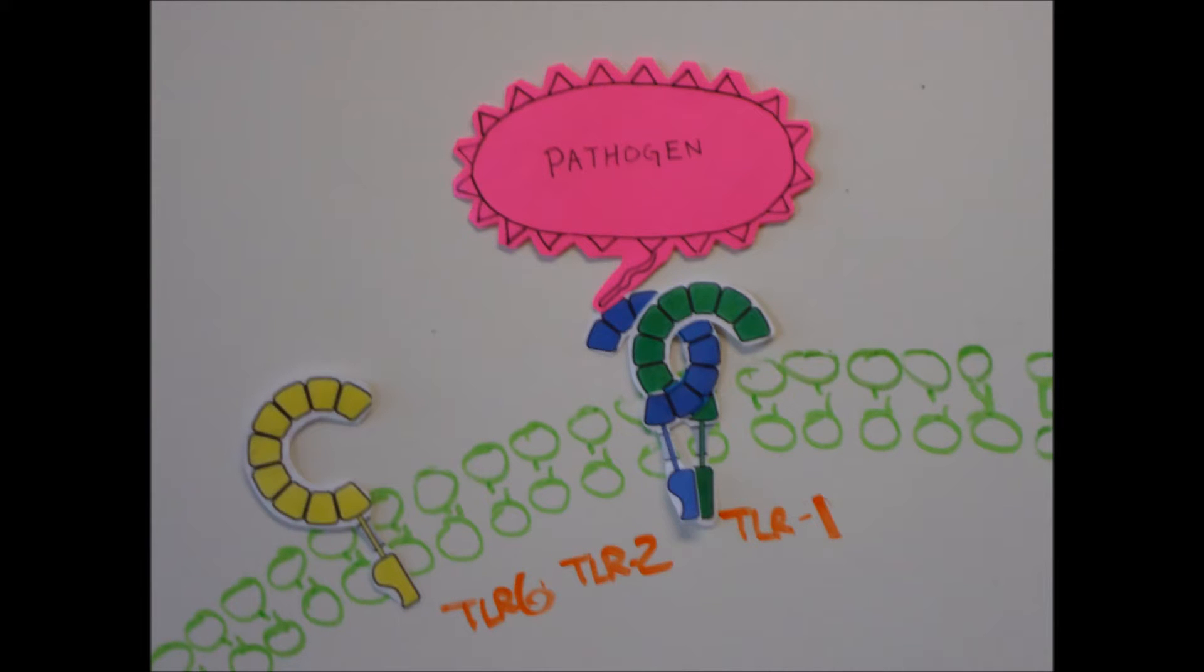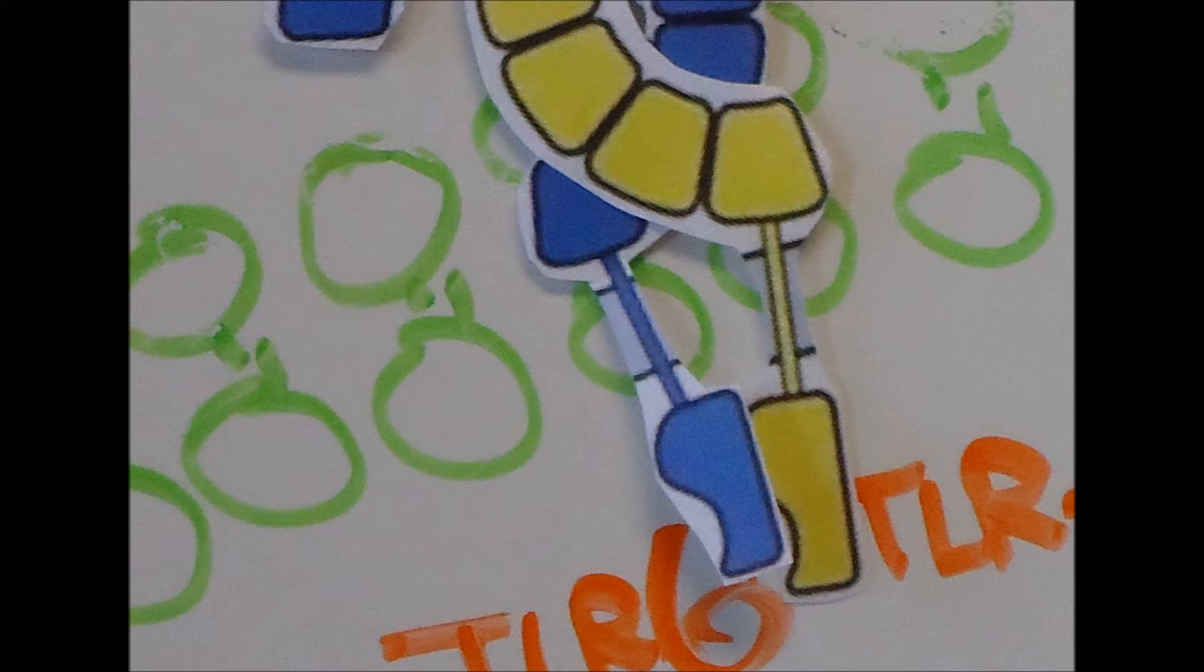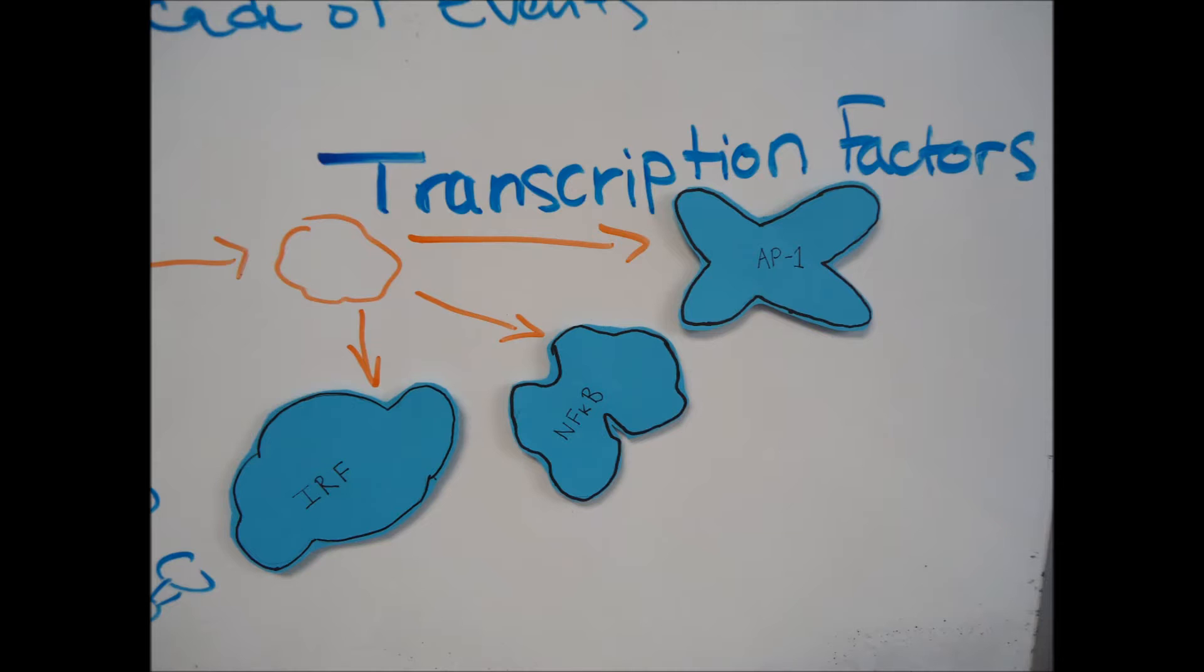When a combination of TLR1 and TLR2 or TLR2 and TLR6 bind, their cytoplasmic tails or TIR domains interact and signal other molecules that form several products.